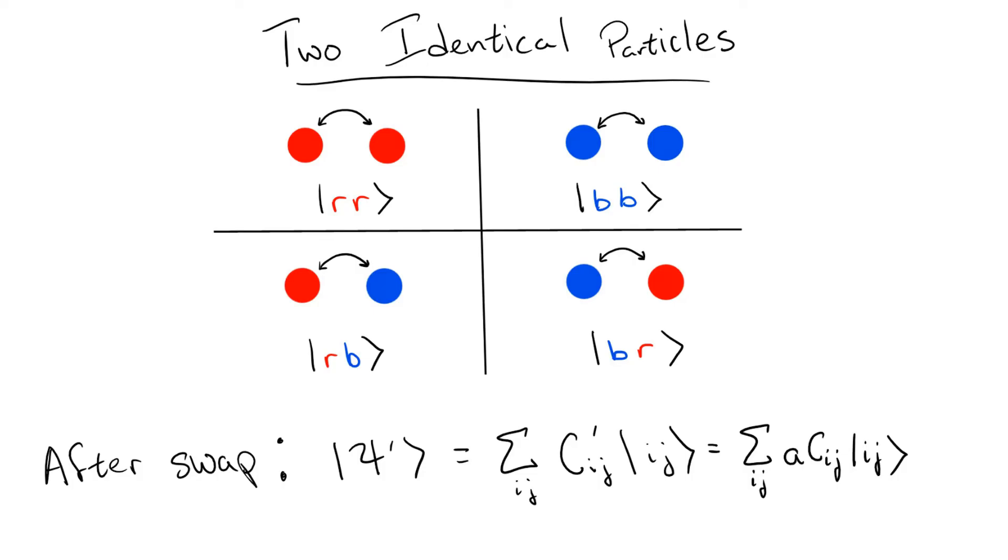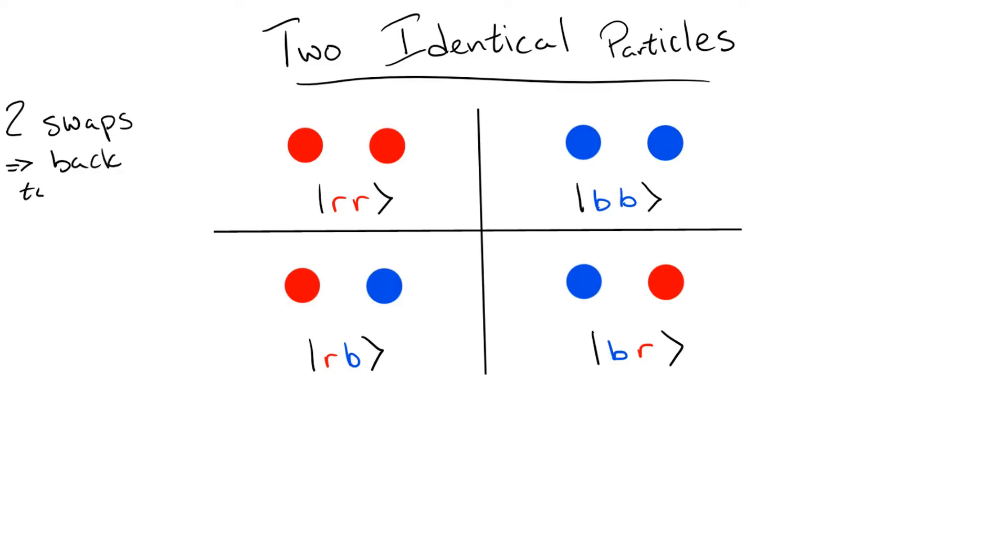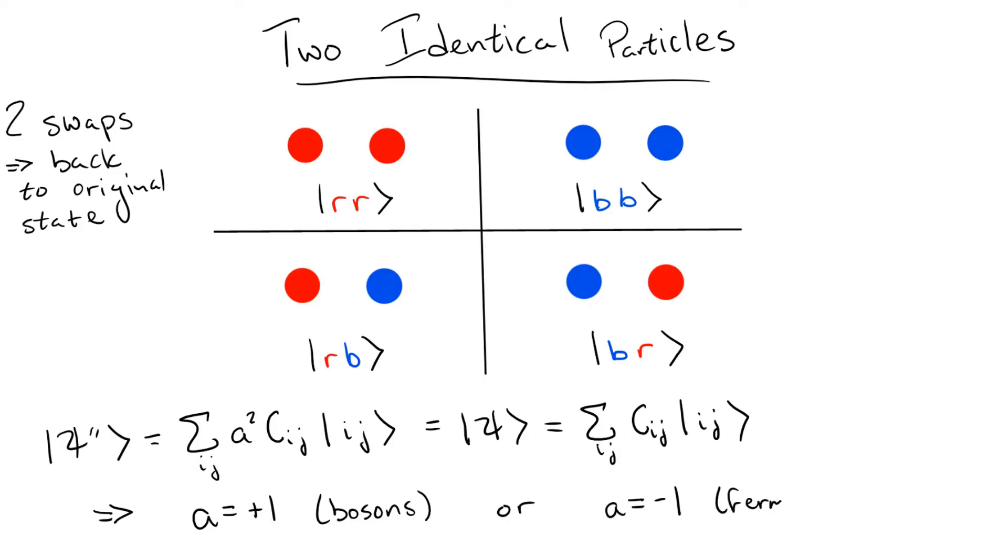Okay, so now we need to think about what happens when we switch the particles twice. Keeping our rules consistent, we should just get another factor of a. However, since we only have two particles and we've swapped them twice, we should end up at exactly the same state we started with. Solving this equation, we see that there are only two options for a. It can only be plus or minus 1.